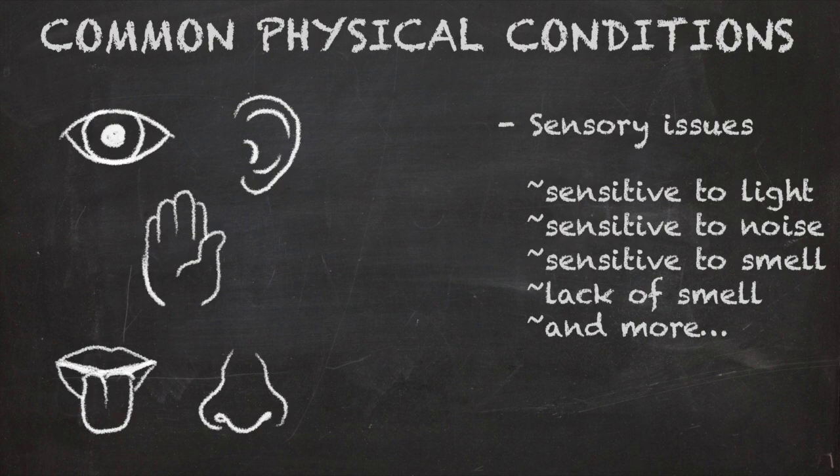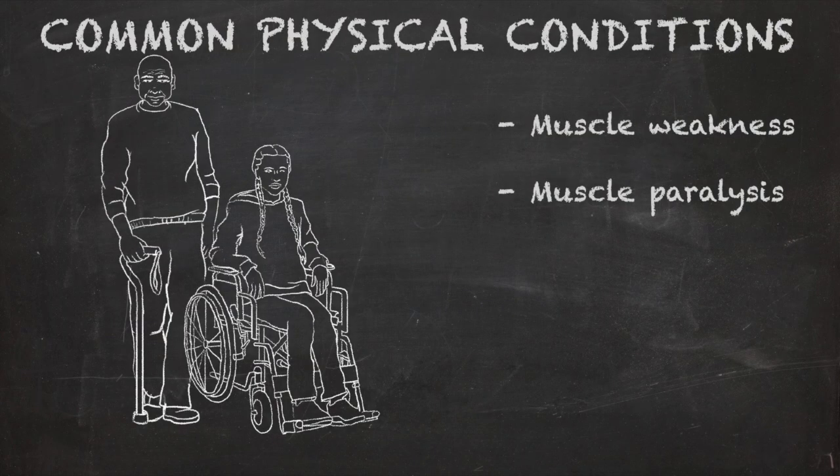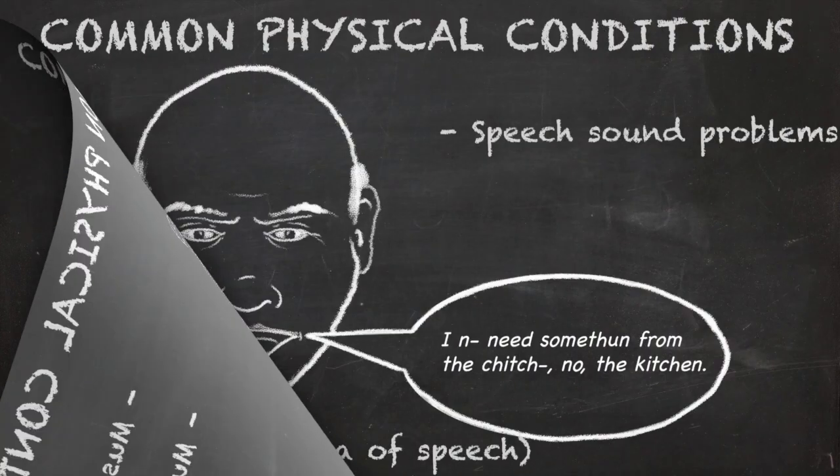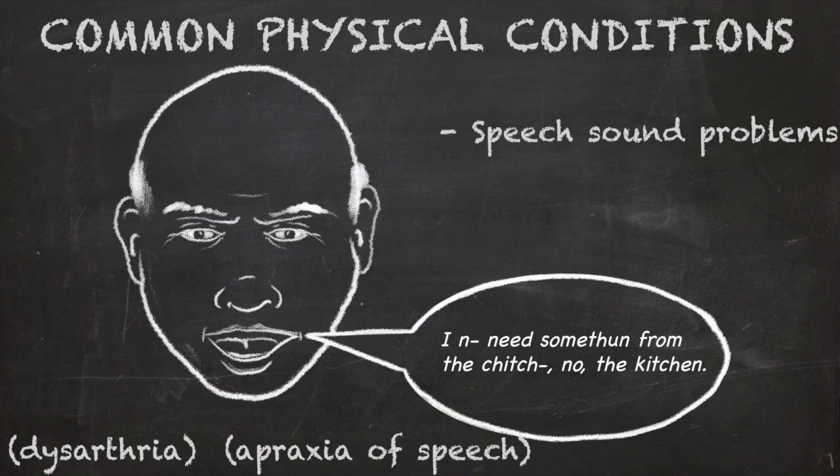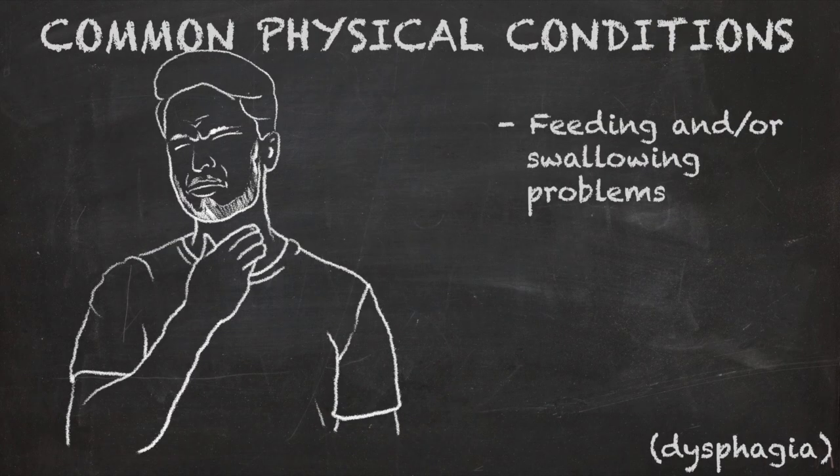Someone may also have sensory issues such as sensitivity to light, noise or smell. More severe TBIs might involve muscle weakness or paralysis, problems producing speech sounds called dysarthria or apraxia of speech, or feeding and swallowing problems called dysphagia.